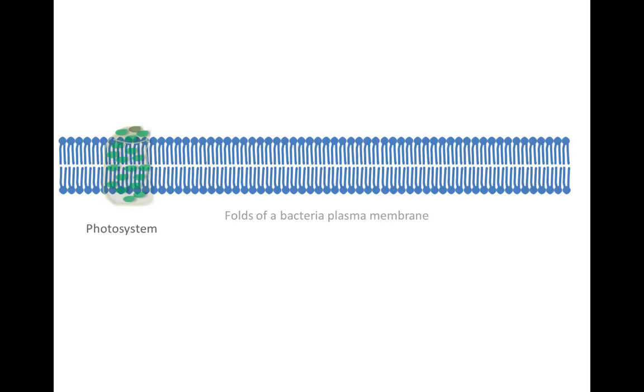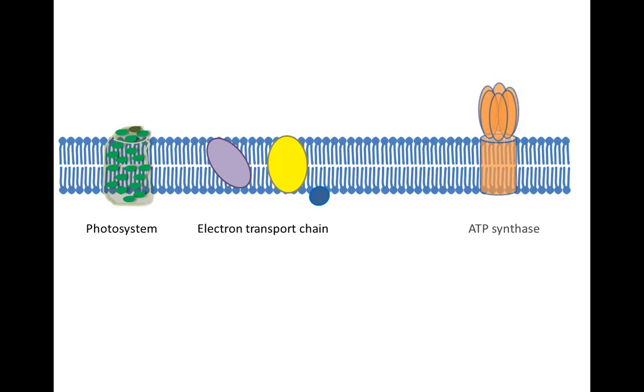Inserted into the membrane are photosystems, electron transport chains, and ATP synthase molecules for making ATP. There are also protons distributed across both sides of the membrane.